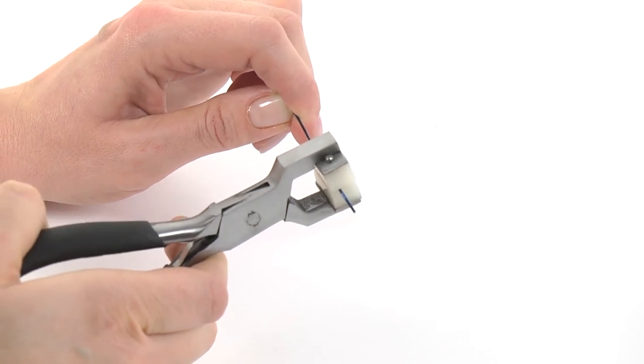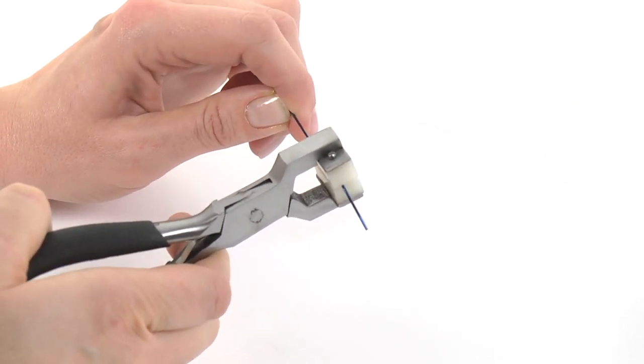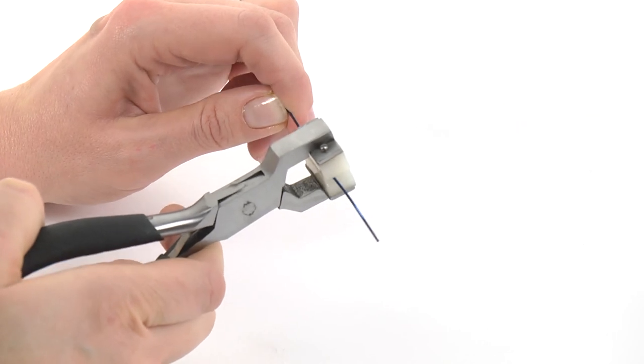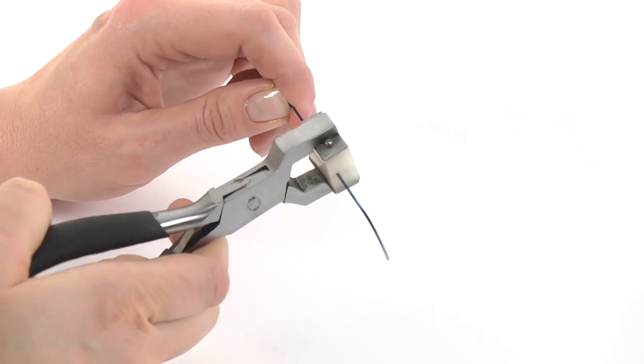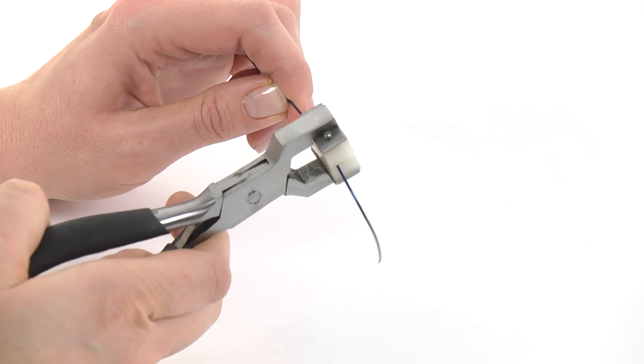As you can see, it makes a gentle curve as you go and makes bracelets a lot easier as the wire will naturally form to the shape of your wrist.